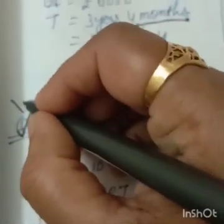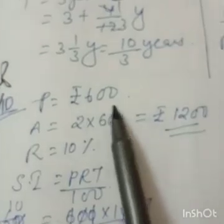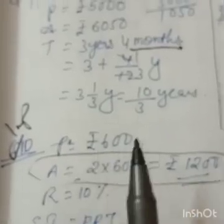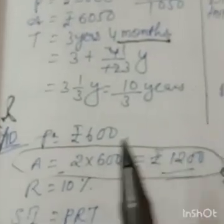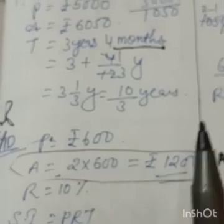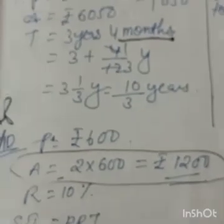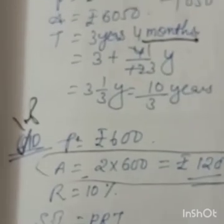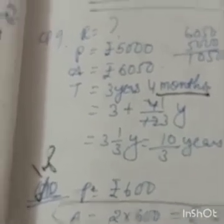Important point: the amount is hidden here. 'Principle doubles' means the principal is added twice — 600 + 600 — or 2 × 600 = 1200 is the amount.